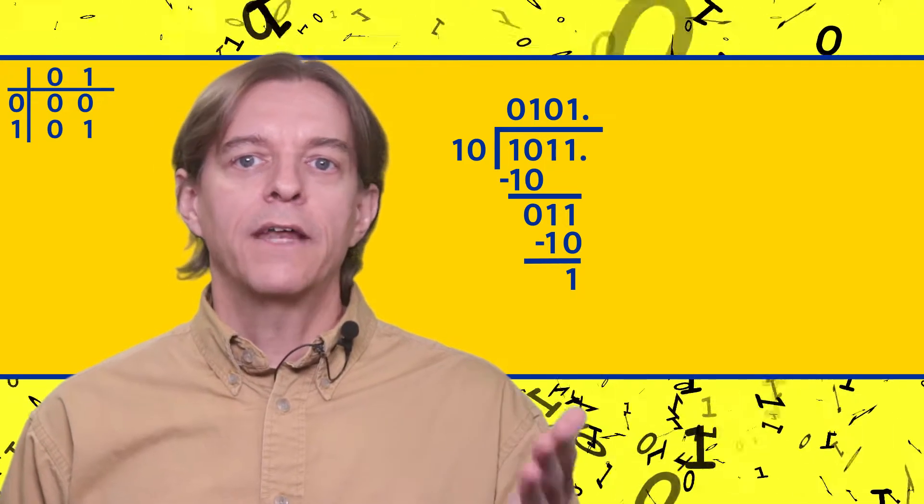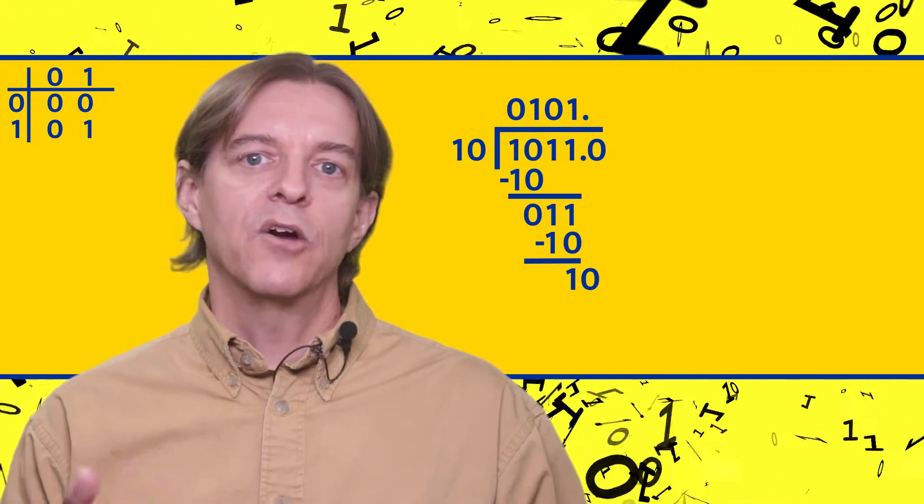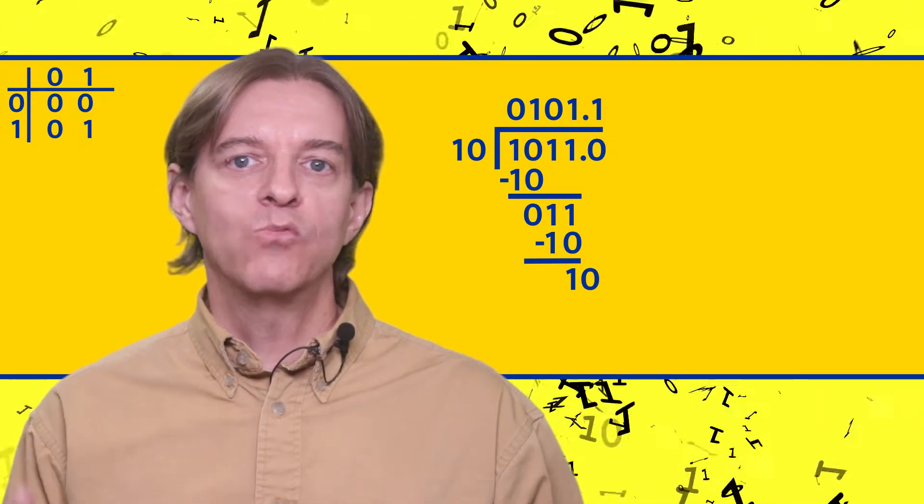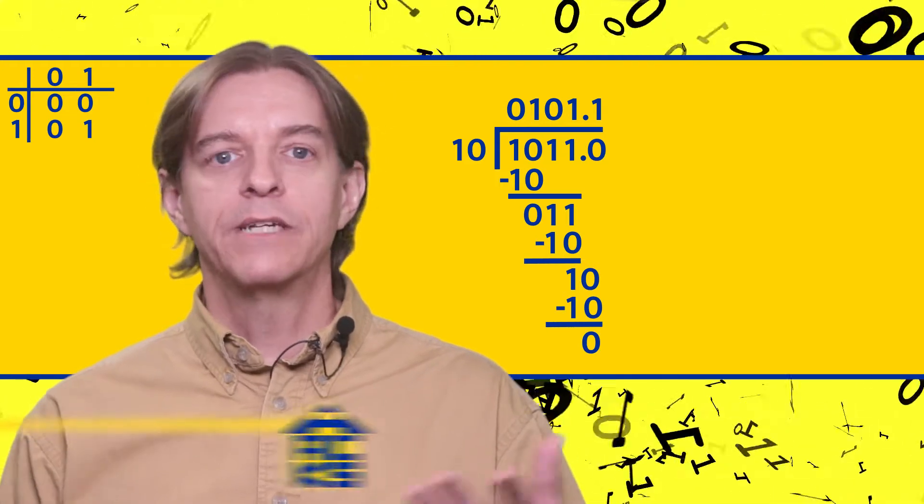If we do this, we place a dot on the quotient and bring down a zero next to our remainder, giving us 10. 10 is equal to 10, so we place a one in the quotient and subtract the dividend from the working value. The result is zero, and we're done.